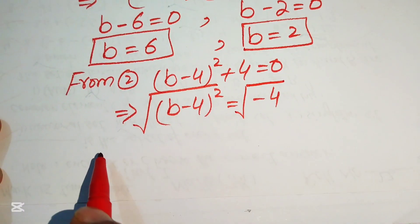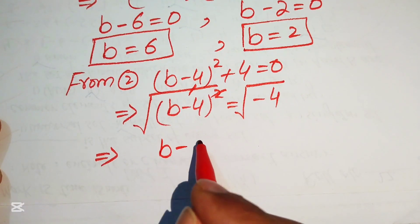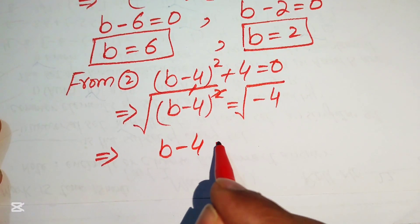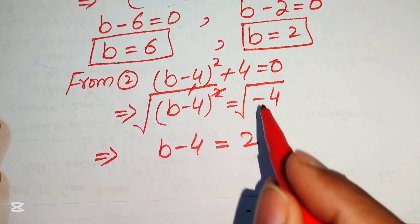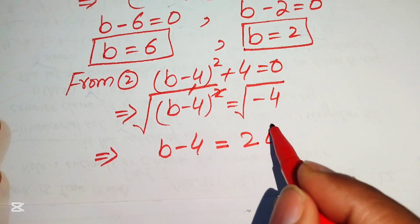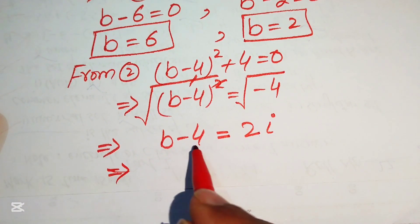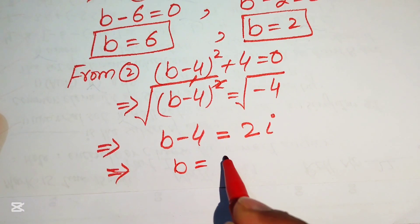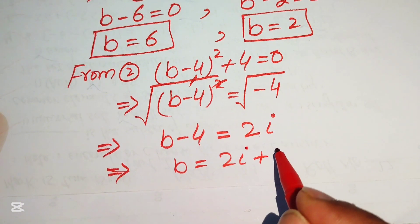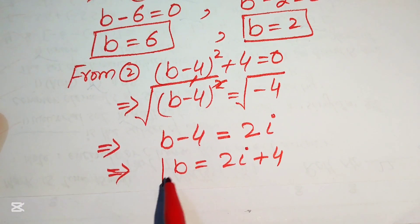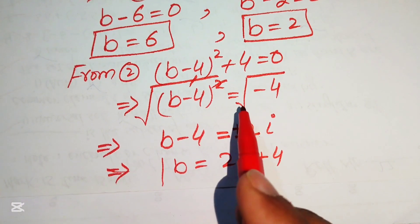To find b we take the square root of both sides. The square root of (b minus 4) squared gives b minus 4. For the right side, the square root of minus 4: the square root of 4 is 2, and the square root of minus 1 equals iota (i). So b minus 4 equals plus or minus 2 iota.